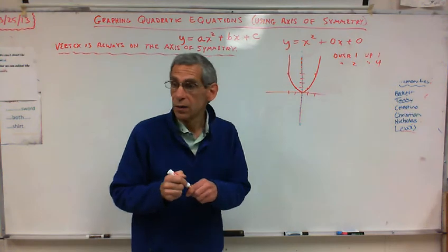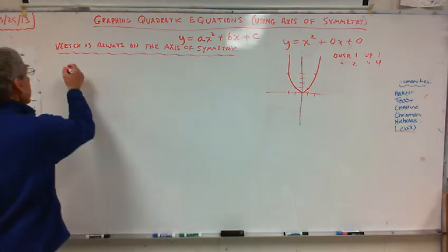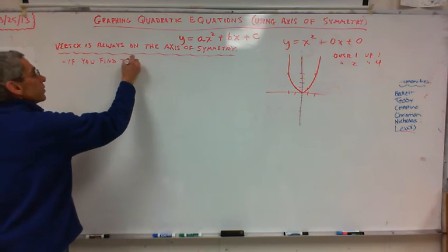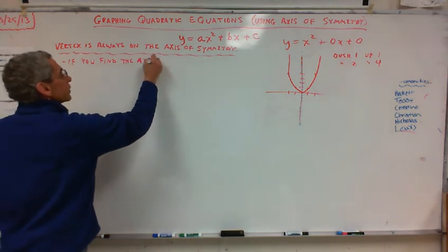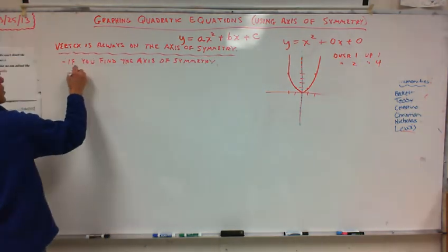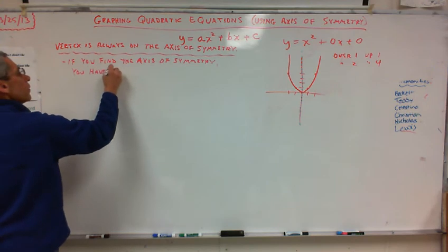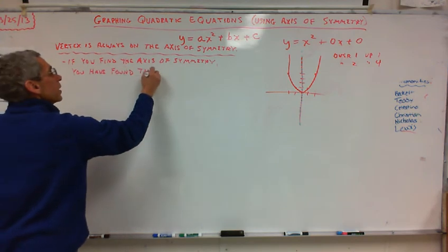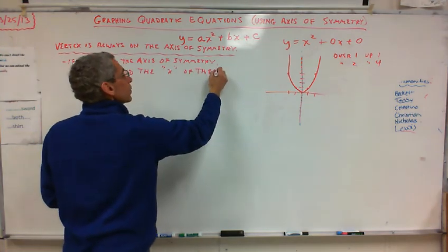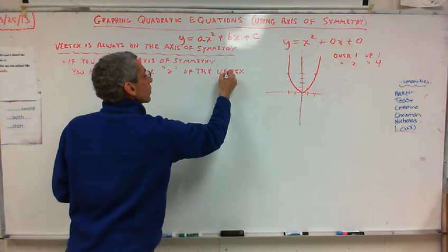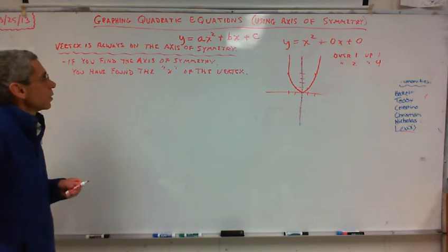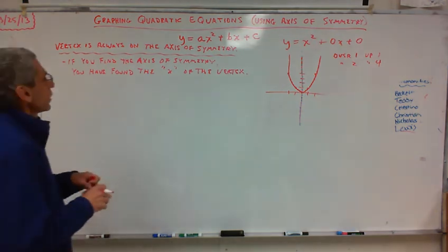Your vertex is always on the axis of symmetry. So that's so important. Your vertex is always on the axis of symmetry. Therefore, if you find your axis of symmetry, you have found the x of the vertex.